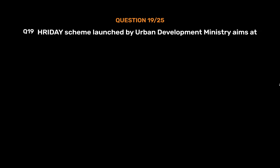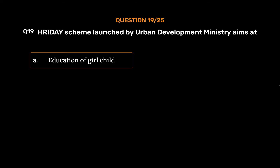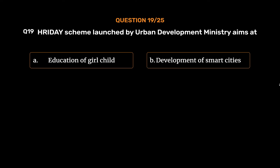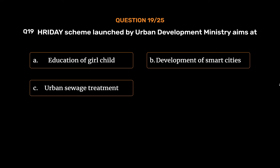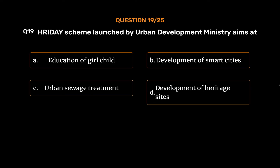Question No. 19. HRIDAY scheme launched by Urban Development Ministry aims at: Option A: Education of Girl Child. Option B: Development of Smart Cities. Option C: Urban Slum Treatment. Option D: Development of Heritage Sites.